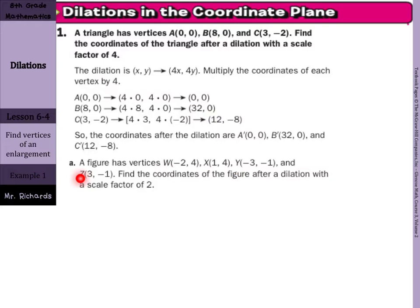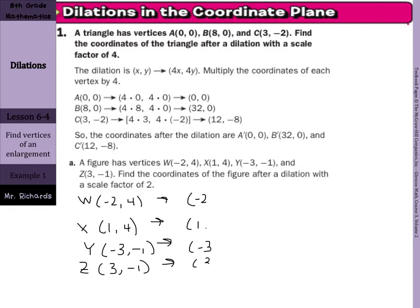Let's list out our points: W was (-2, 4), X was (1, 4), Y was (-3, -1), and Z is (3, -1). What we're going to do with each of these, we have a scale factor of 2, so we're going to take each of our x's and multiply that by 2.